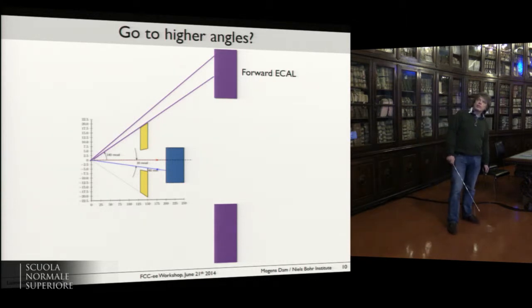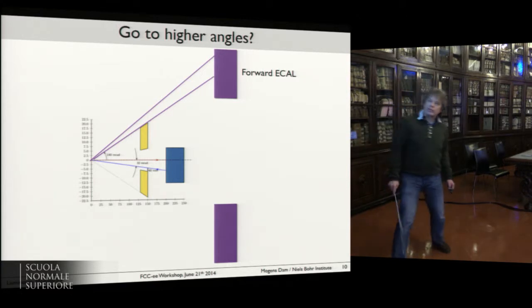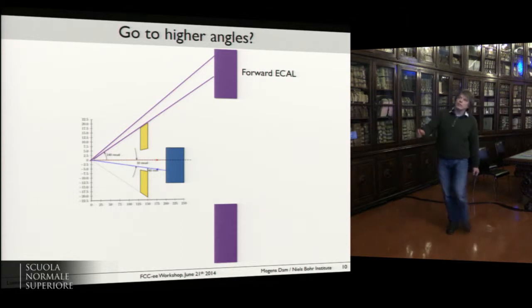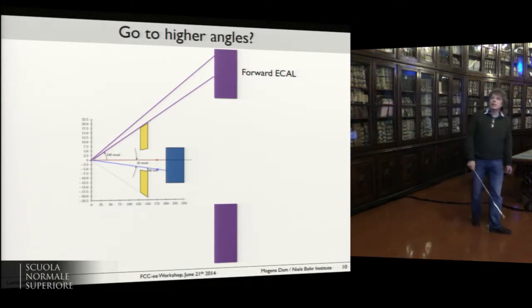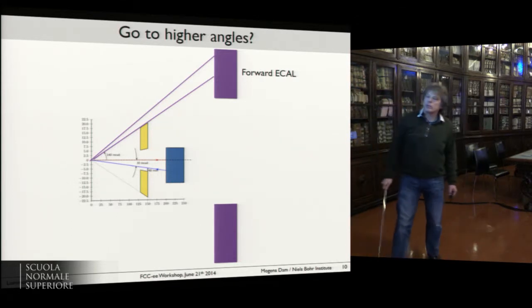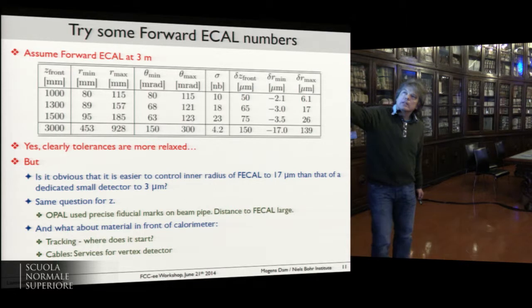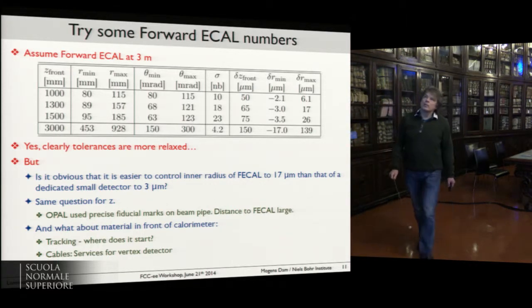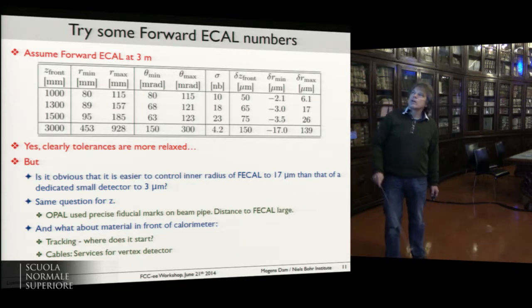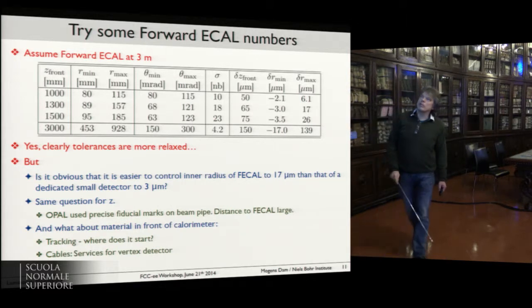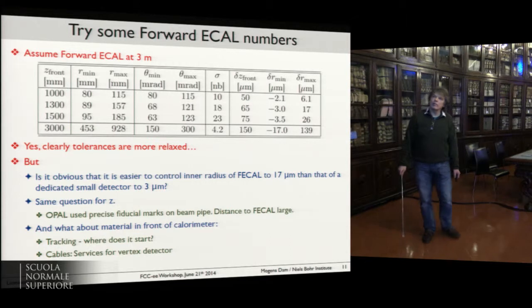I drew this picture after the conference dinner — apologies it's not very impressive. Some thoughts: can we go to a higher scattering angle? What about trying to use the forward electromagnetic calorimeter? I put the forward EM calorimeter at 3 meters and computed some angular range, cross-section, and the resulting precision requirements. At large angles we are much more relaxed on the inner radius of acceptance.